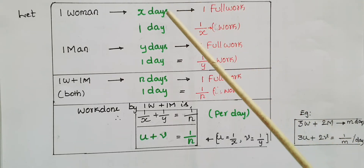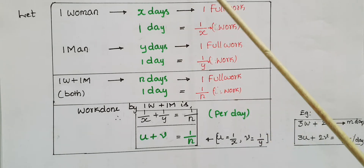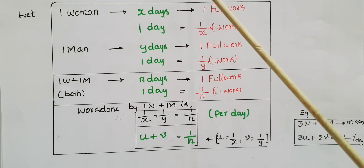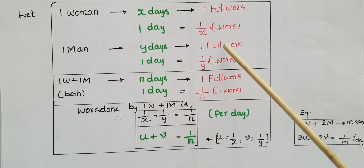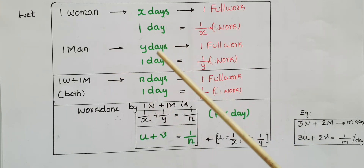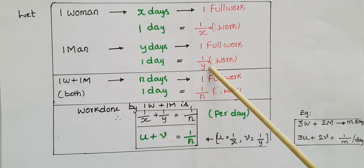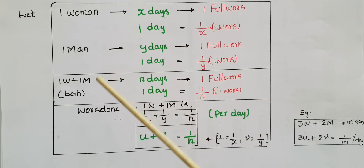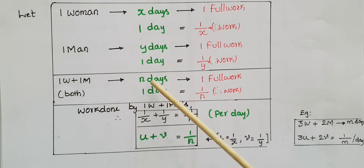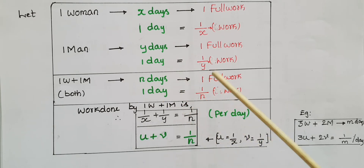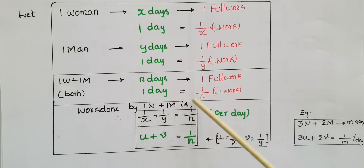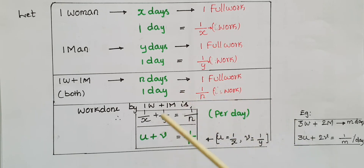Now let one woman complete the full work in x days, then per day she can do one-by-x part of the work. Similarly, if one man can do the same work in y days, then he can do one-by-y part per day. If both together can do the work in n days, then per day they do one-by-n of the work. So: one-by-x plus one-by-y equals one-by-n.